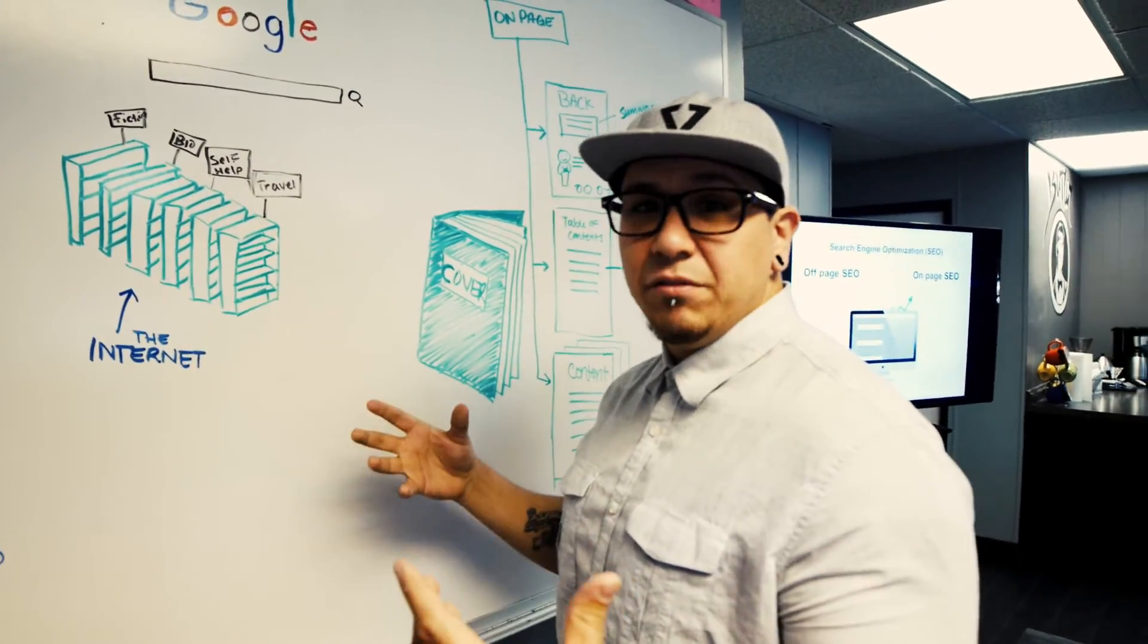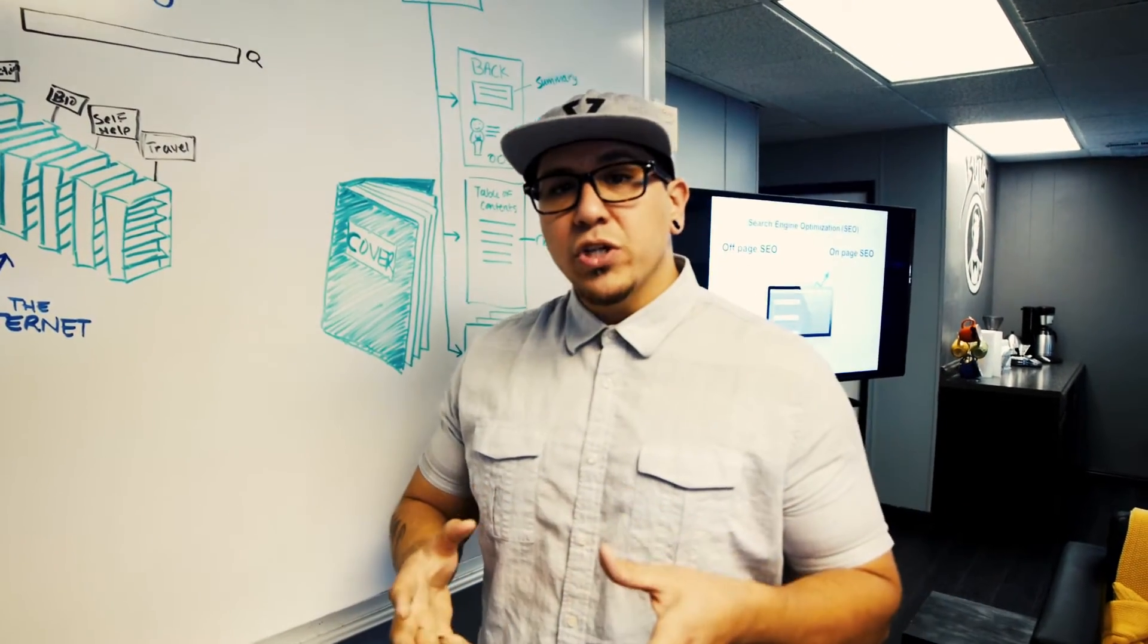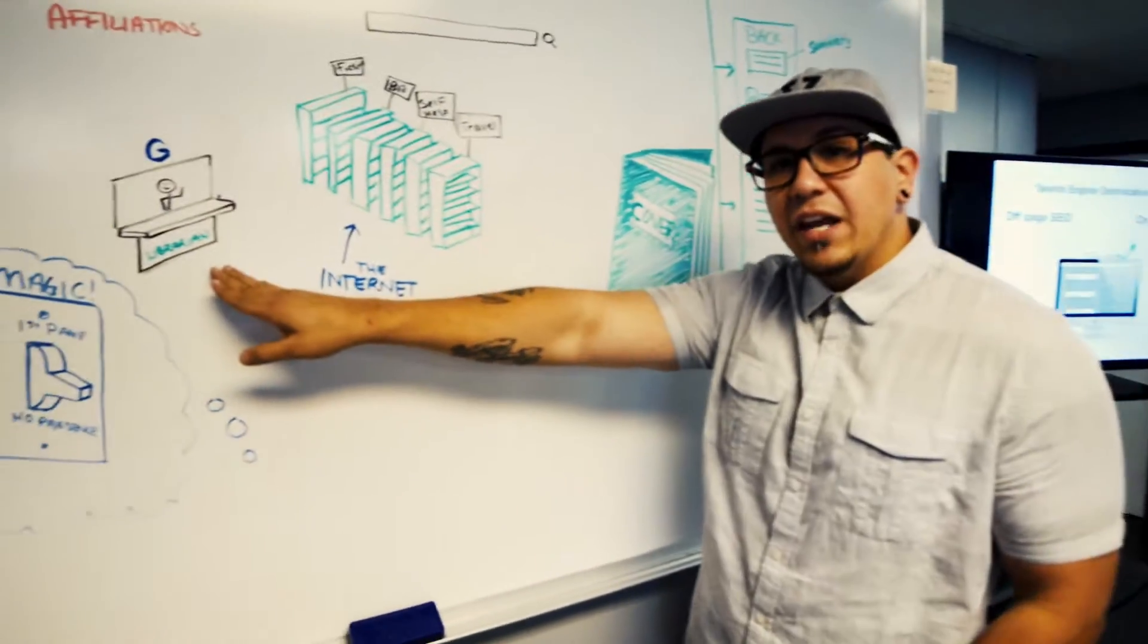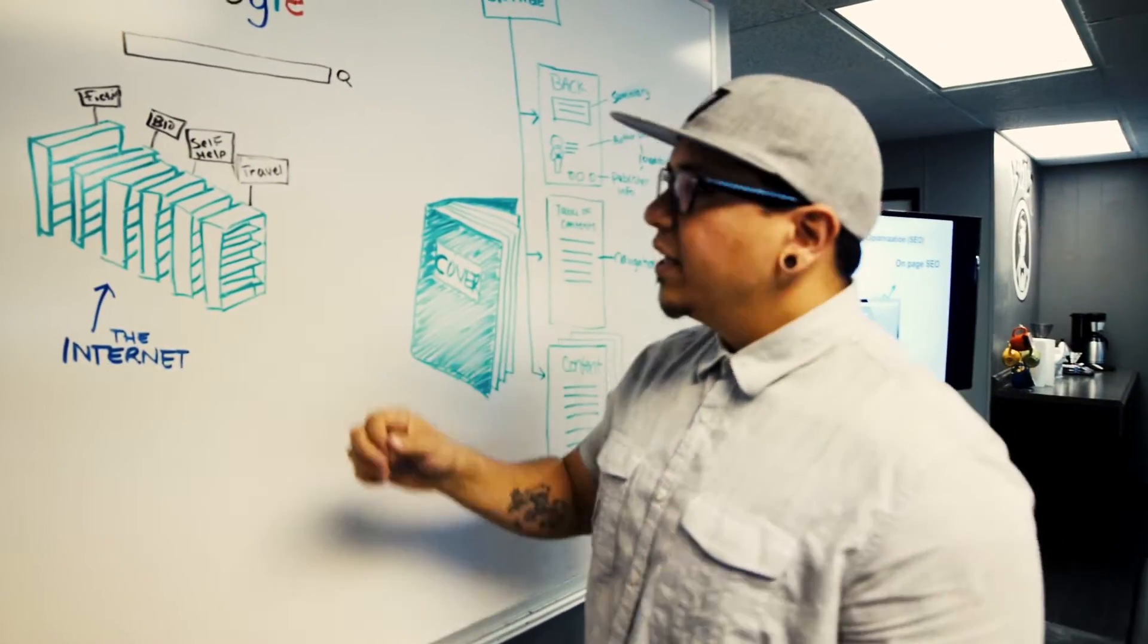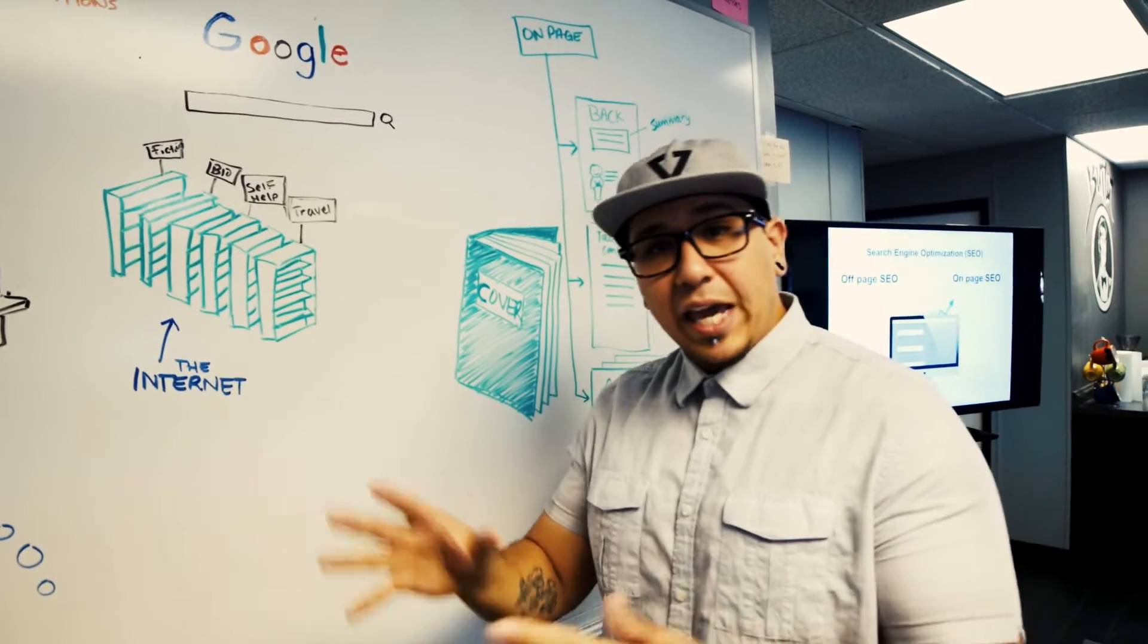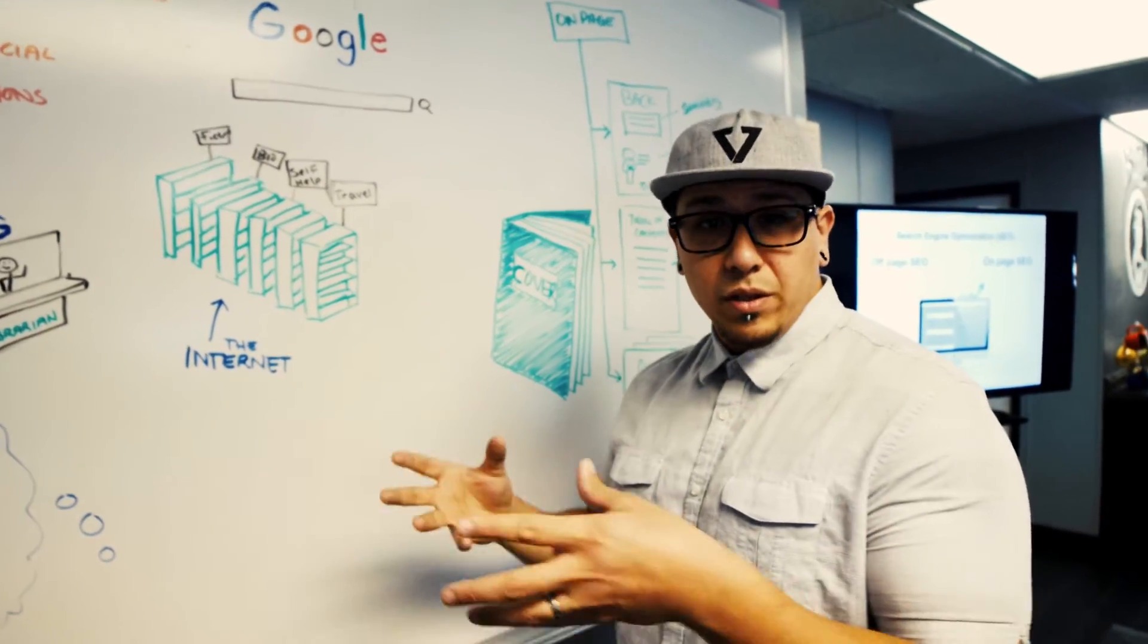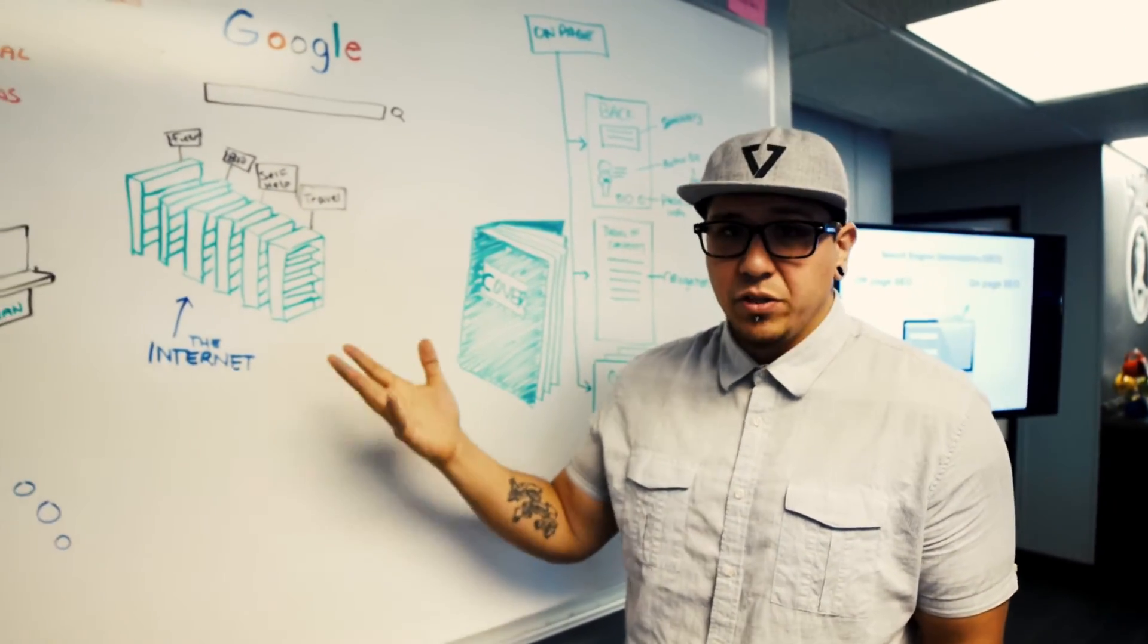When you go to a library this huge and you're looking for something really specific, you go to the librarian and you say, 'Hey librarian, I'm looking for a book on self-help in whatever area.' That's who Google is. Google is the librarian of the internet. They know the layout of the library or of the internet. They know how to point you to the most relevant resource they think you're looking for. That in a nutshell is how search engines work - that's all they do. They're the librarian of the internet.